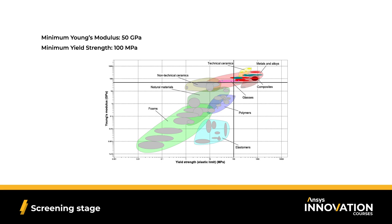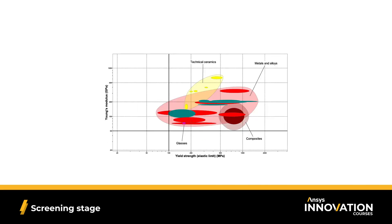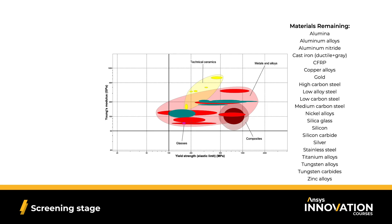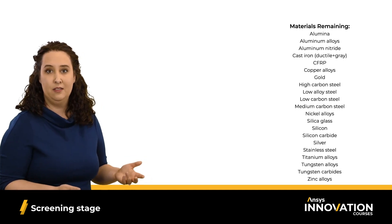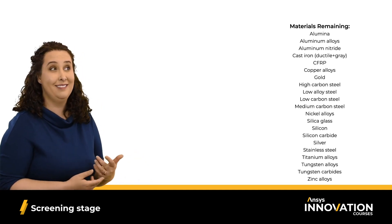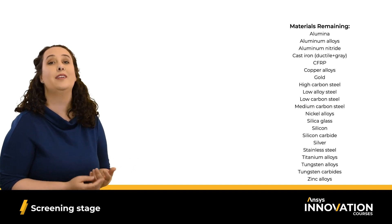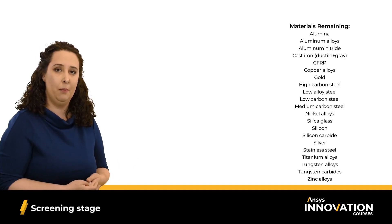So if we zoom in and remove all unsuitable materials, we end up with 22 candidates, which are shown here. Well, are all of these materials suitable candidates? It can be tough when looking at so many options. And yes, 22 is a lot when you're trying to pick the optimal material for the job.